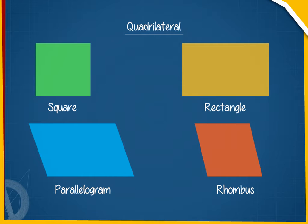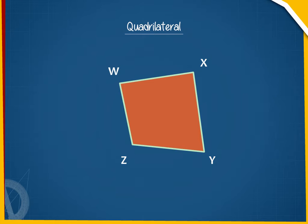This means a square, a rectangle, a parallelogram, and a rhombus are quadrilaterals. See the shape WXYZ.